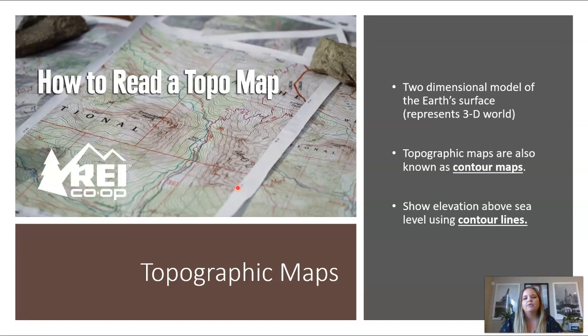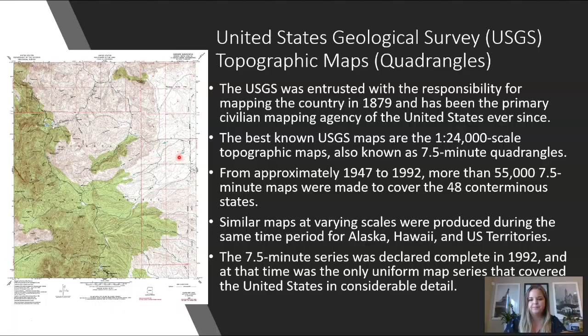Topographic maps are two-dimensional surfaces or maps that show you a 3D world. They represent what we see in topography in the real world, which is the highs and lows in our surface elevation, and they represent that on just a 2D map that you can hold in your hand. They're also known as contour maps, and the lines that you see on the map are called contour lines. They show the elevation above sea level.